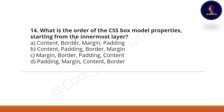Question 14: What is the order of the CSS box model properties starting from the innermost layer? Option A: content, border, margin, padding. Option B: content, padding, border, margin. Option C: margin, border, padding, content. Option D: padding, margin, content, border. The correct option is option B — content, then padding, then border, then margin.